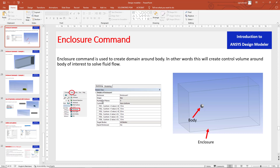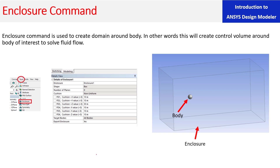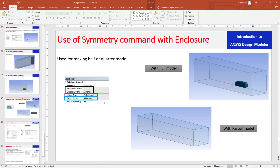In the enclosure command there is a 'number of planes' option. There are a few things here: number one, you can only use the principal planes which are XY, YZ, and ZX. Secondly, you cannot use two planes which are parallel to each other — meaning you cannot cut the body at two locations that are parallel. For example, if I want to cut the body in half from one location and also reduce the geometry from another parallel location, the number of planes option in the enclosure will not work. That's why we need to use the standalone symmetry command.